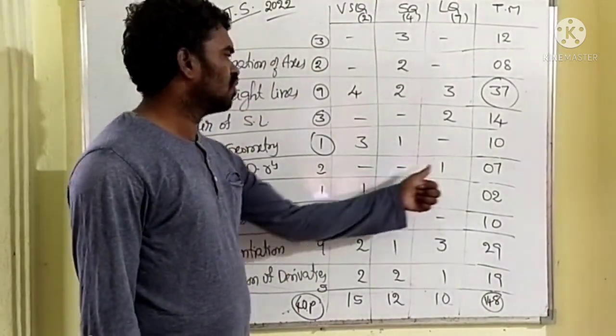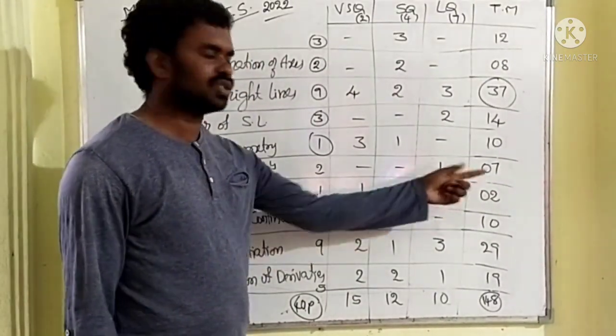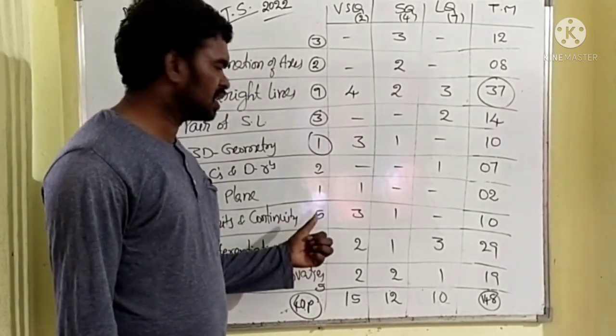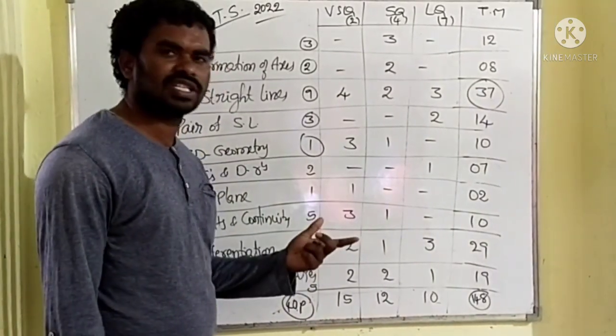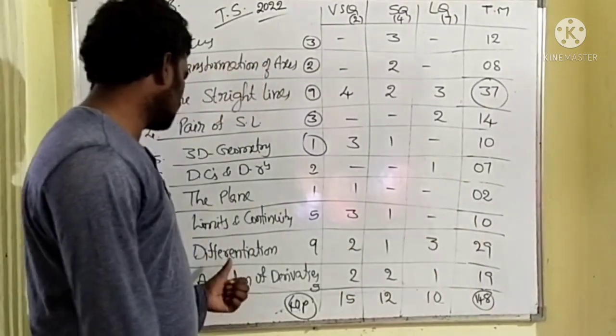Direction ratios, 1 seven marks question. The plane, only 1 two marks question, small chapter. Limits and continuity - in this, continuity is not there in our syllabus. 3 two marks questions, 1 four marks question, 10 marks totally.